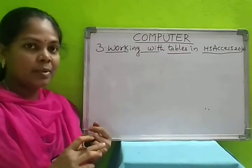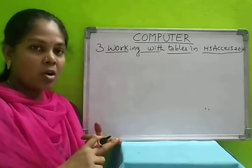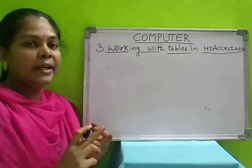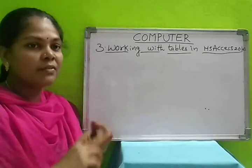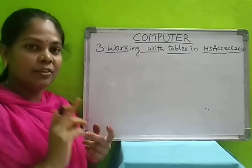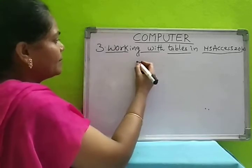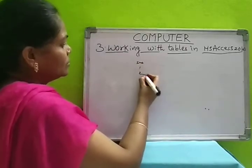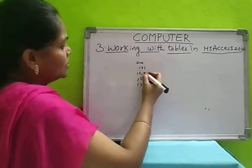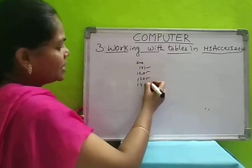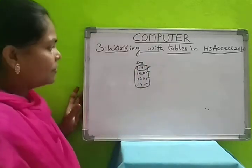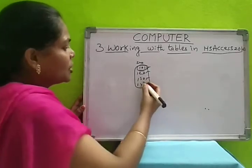If you select S number as primary key, a key symbol will be displayed in front of the column name, indicating that field is the primary key. To select the primary key, that column should be unique — each and every value should be different and it should not be null. You should not leave that column unentered. For student number, we give 1, 2, 3, 4 or 10, 12, 13, 14 — all different values.